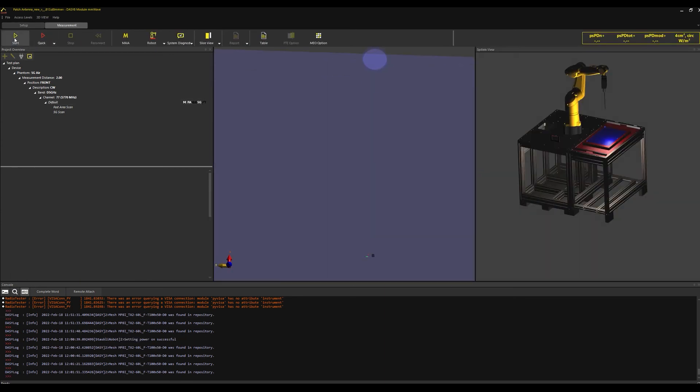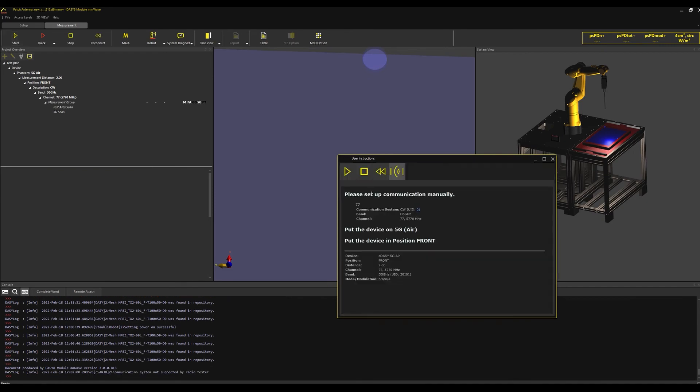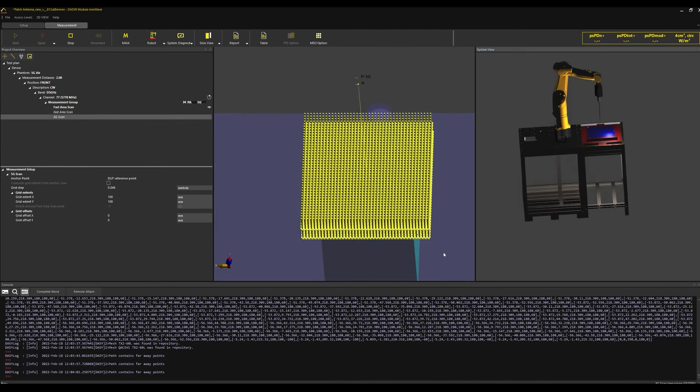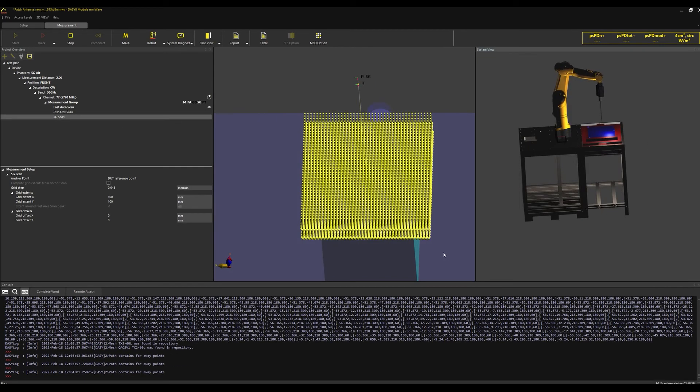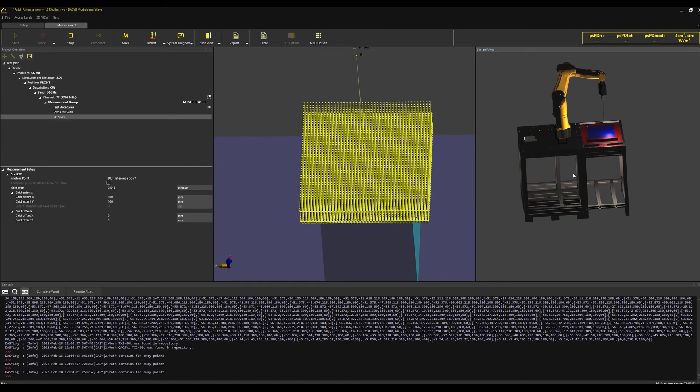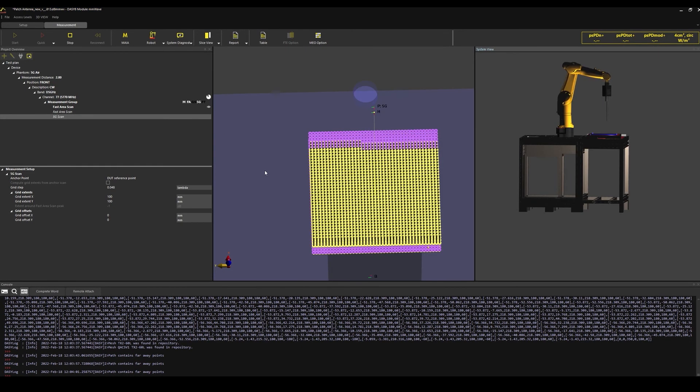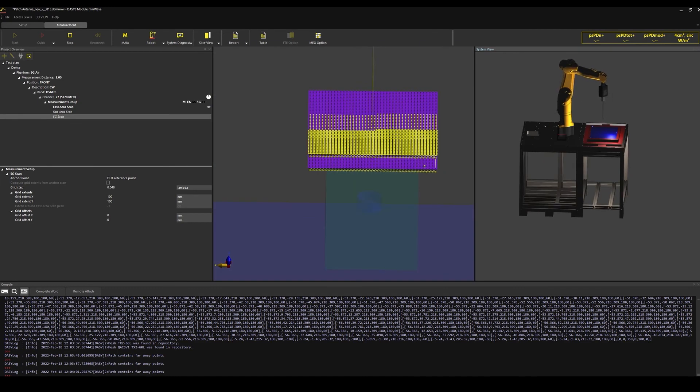I start the measurements and accelerate the video. The fast area and 5G scan measurement grids with this algorithm are similar to the previous versions, i.e., the scan times are the same and do not increase if the new algorithm is used.